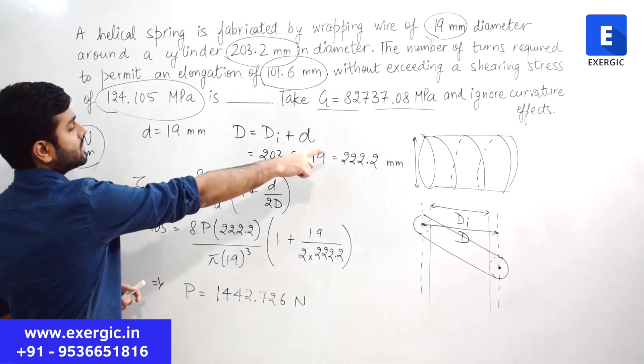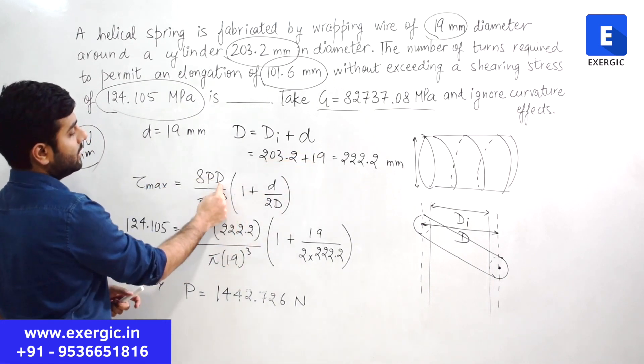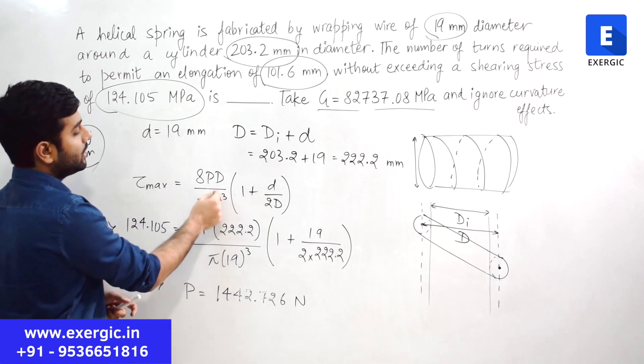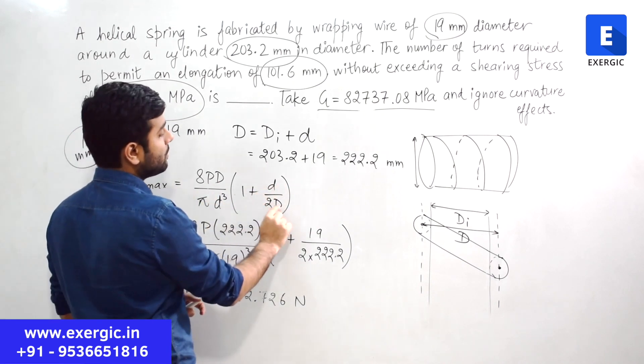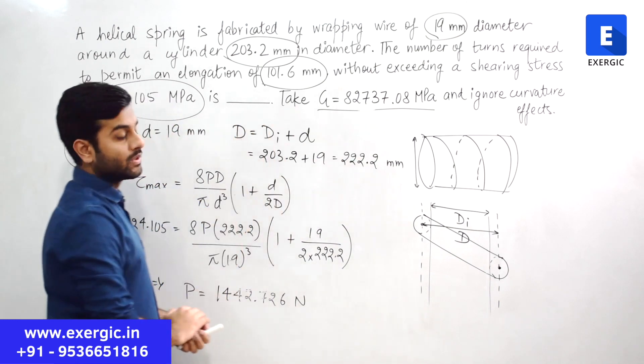So putting the value of tau max here, 8P, D value is coming from there. This is where I have written it. Pi is here. D cube is 19 cube. 1 plus 19 divided by 2 multiplied by 222.2.